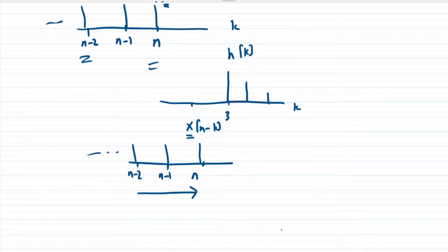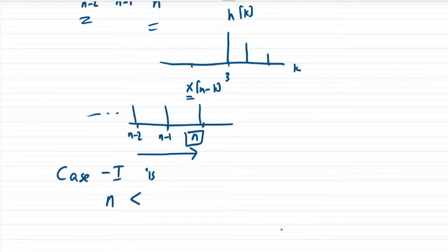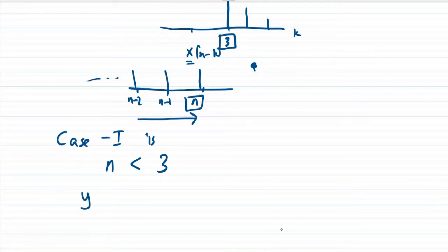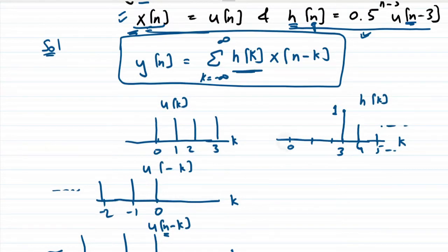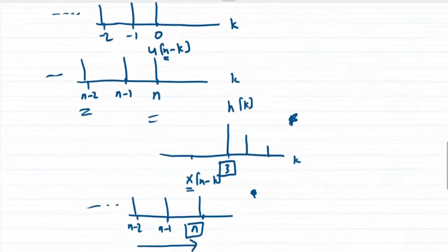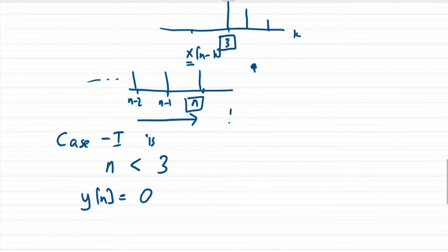We now consider two cases. Case one is when n is less than 3. In this case, there is no overlap between h(k) and x(n-k). Since no point of x(n-k) overlaps with h(k), the output y(n) is simply zero.